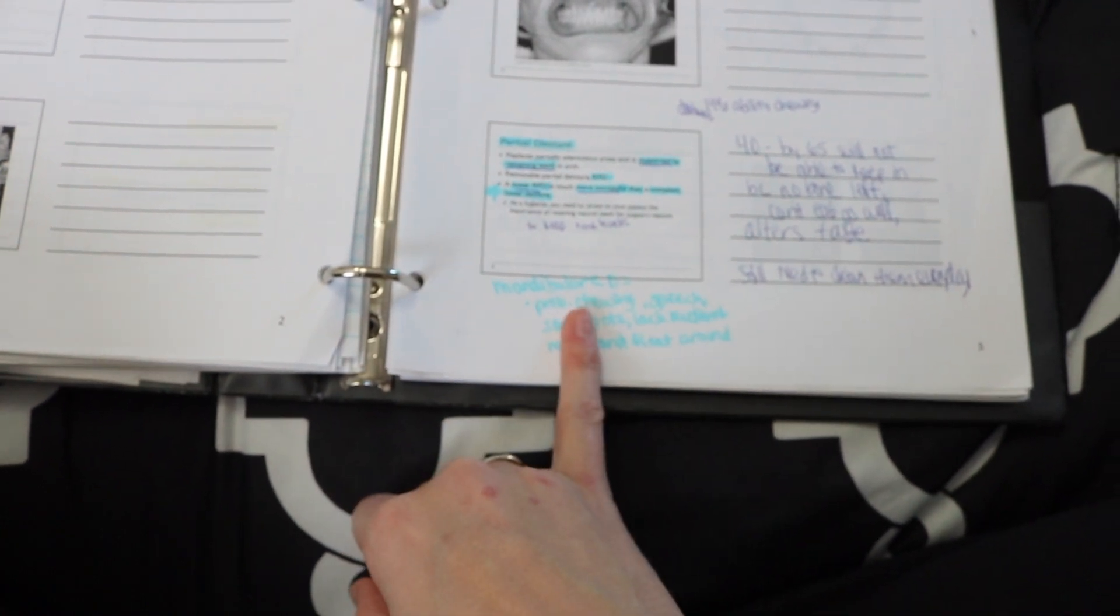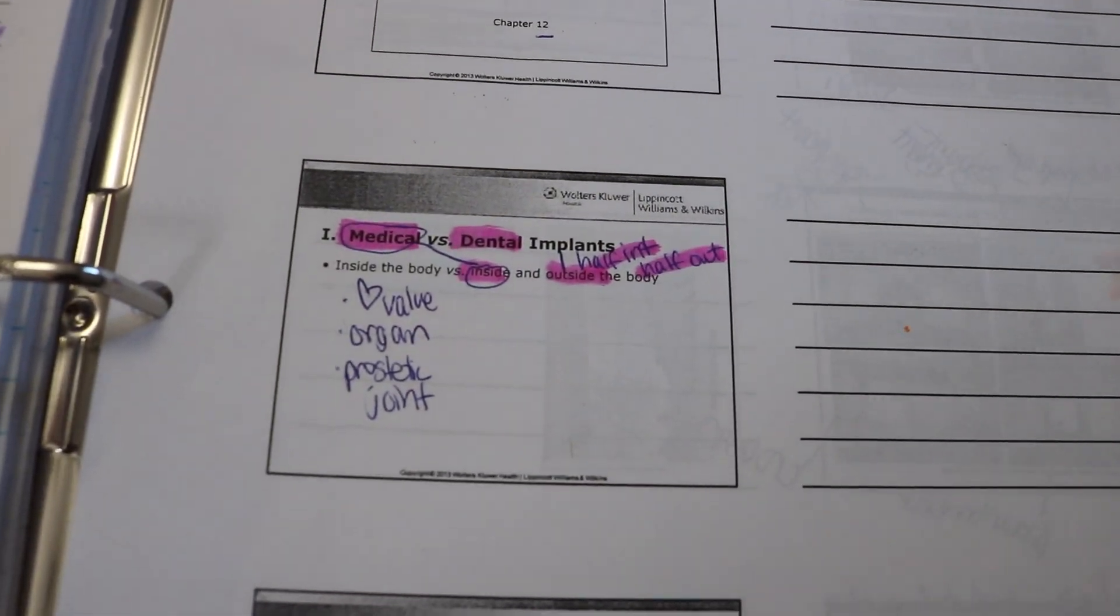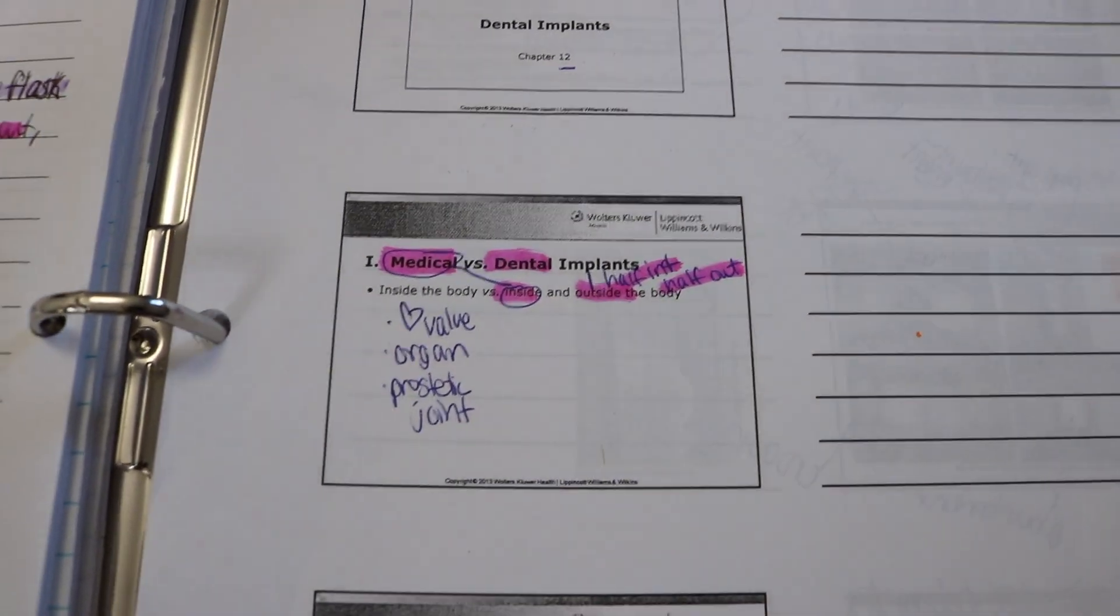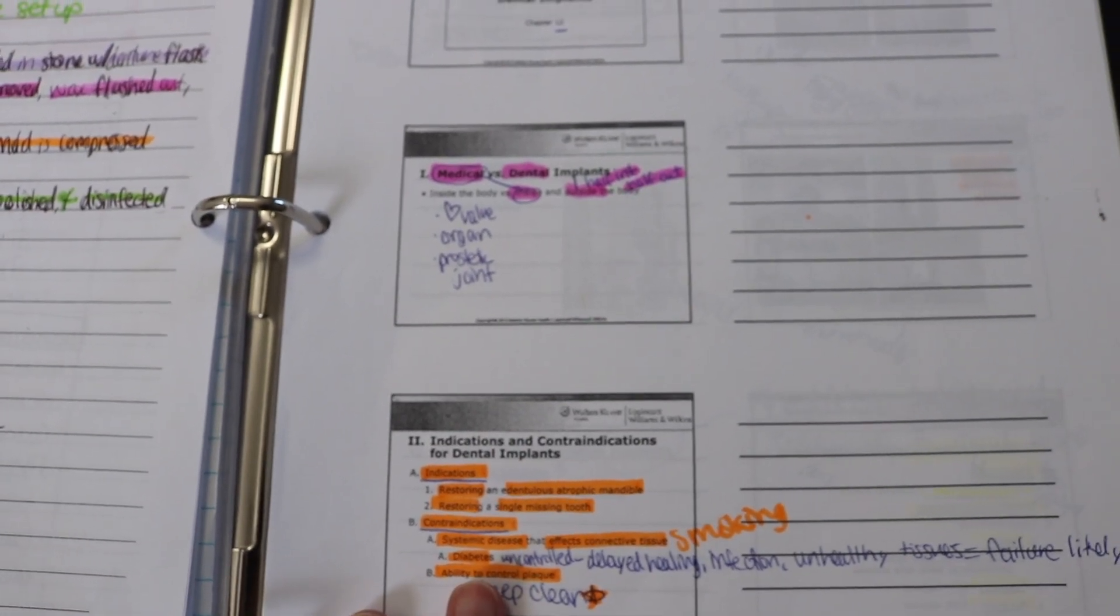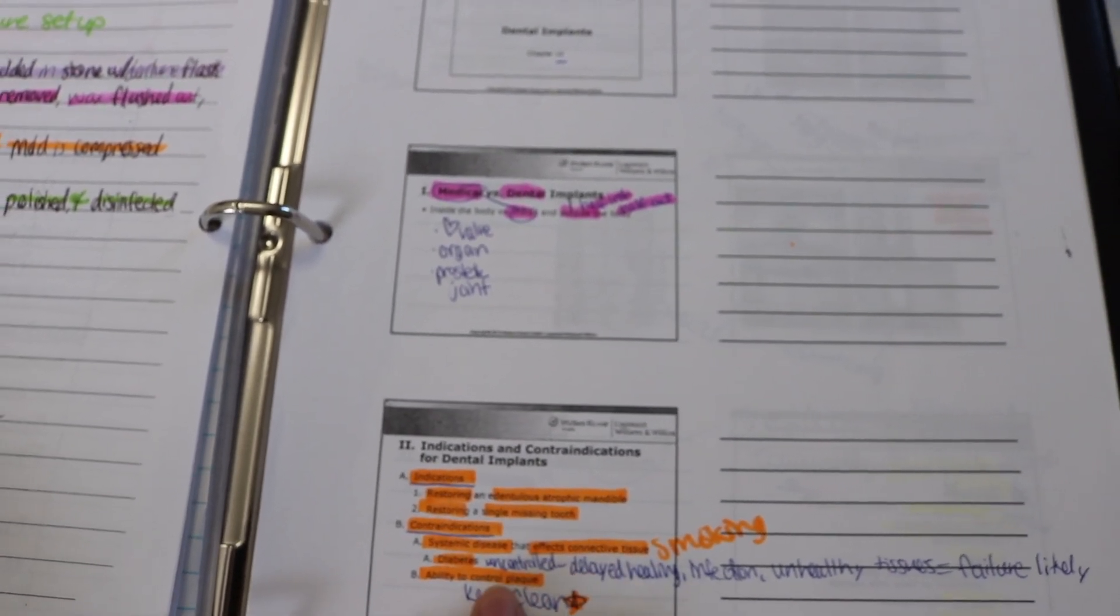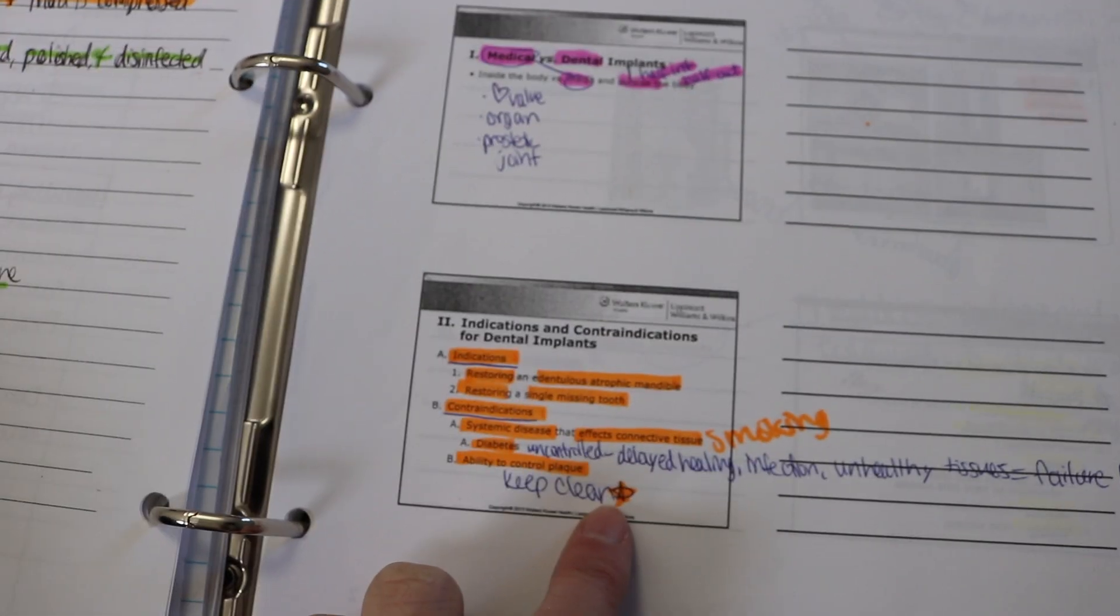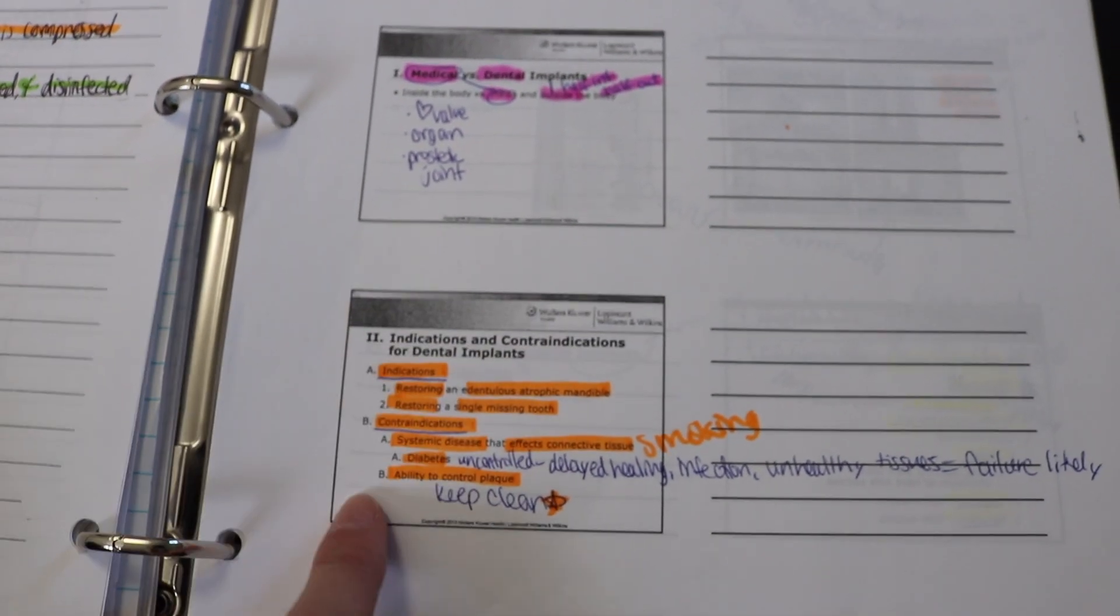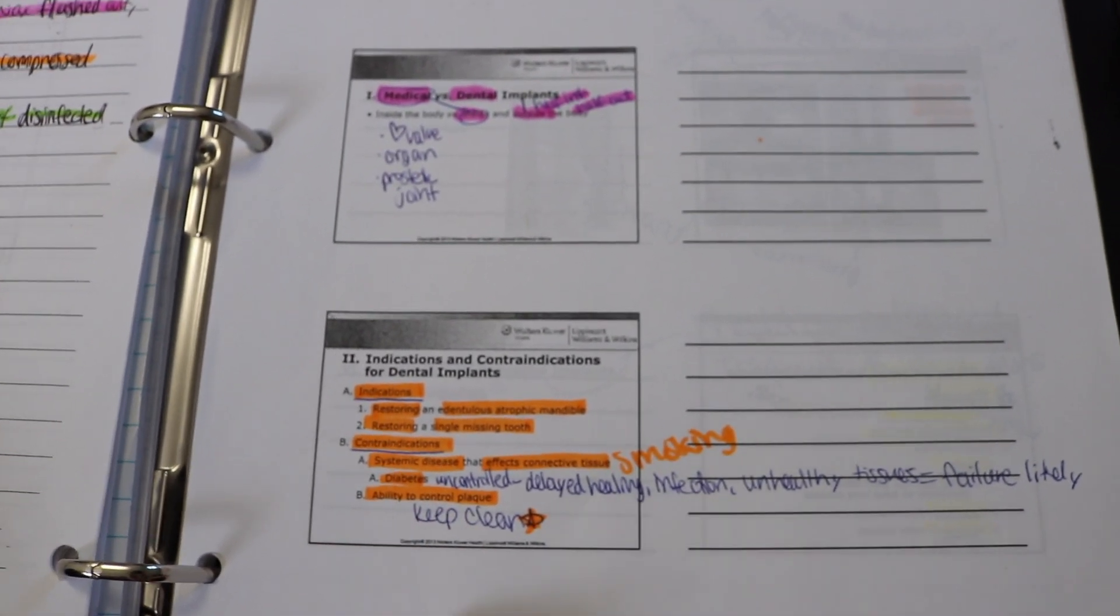So the difference between a medical implant and a dental implant is that a medical implant is inside of the body so it's like a heart valve, an organ, a prosthetic joint. A dental implant is partially inside the body and also partially outside of the body. Some implications that can occur whenever we are doing implants is any systemic diseases that can affect the connective tissue, if you're a smoker, if you have diabetes especially if it is uncontrolled that will delay healing, it'll increase your risk for infection and it will increase your likelihood of it actually failing. Also your oral hygiene, so what is your ability to keep it clean. If you keep it clean you're going to have a good result but if you don't keep it clean it's probably not going to last you very long.